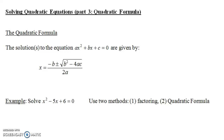In this video we're going to talk about the quadratic formula and using it to solve quadratic equations. The quadratic formula says the solutions to ax squared plus bx plus c equals zero are given by x equals negative b plus or minus the square root of b squared minus 4ac, all over 2a. This formula doesn't just drop out of the sky — it can be derived using a technique called completing the square.